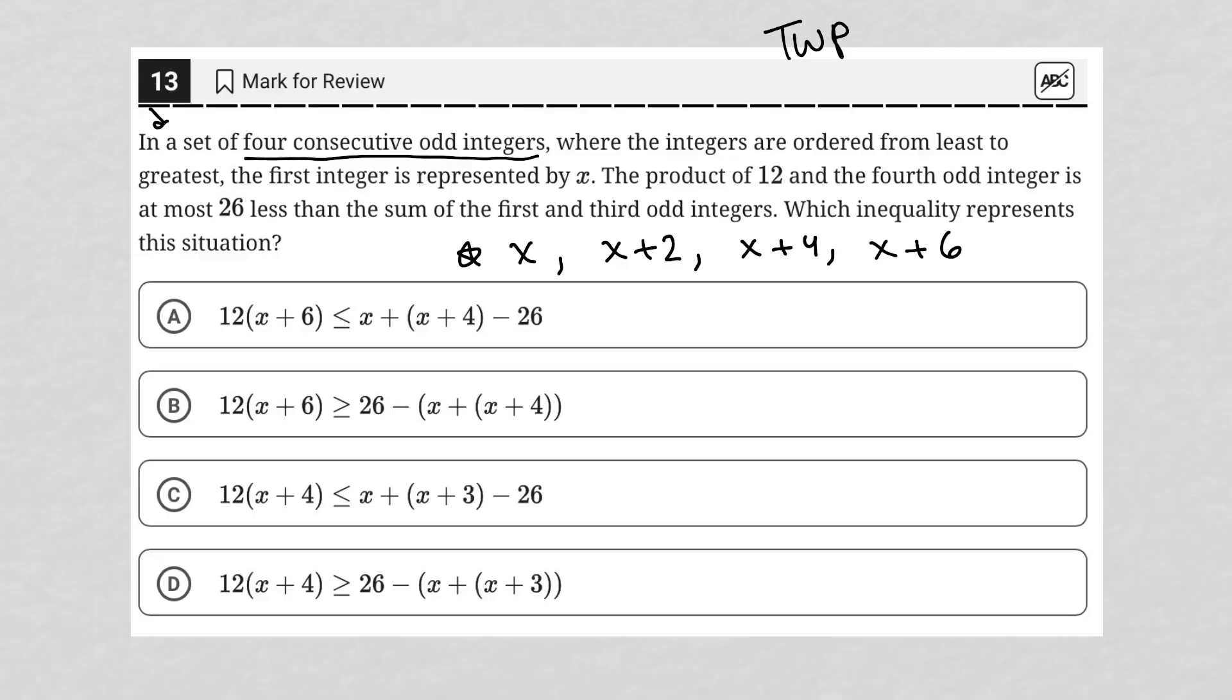So this is accurate. That represents four consecutive odd integers, starting with the value of X. The next sentence then says the product of 12 and the fourth odd integer. So 12 product means multiply. So 12 times X plus six is at most 26 less than. So at most means less than or equal to.